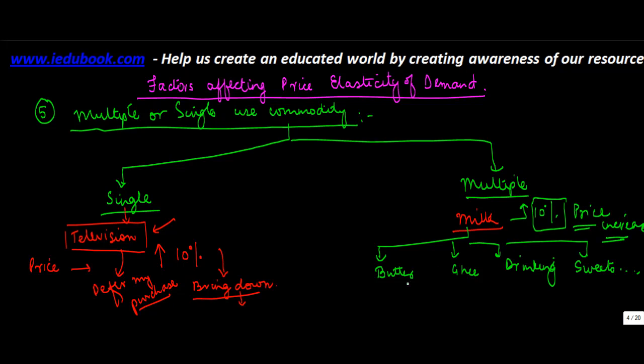Why? Because you may say okay, I will not make butter, I will not make ghee, but you have to keep it for drinking. The guys who make sweets will keep on using milk for this purpose. Therefore, we say that the price elasticity of goods having multiple uses is less and price elasticity of goods having single use is more.